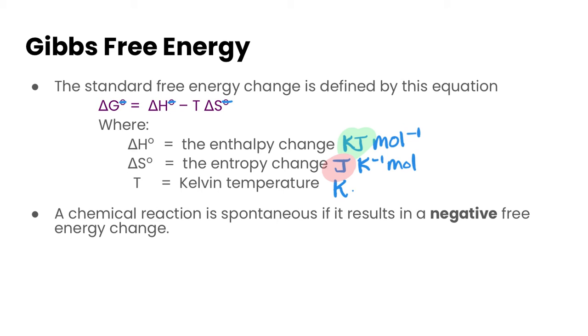Now when we do this calculation, a chemical reaction is spontaneous if it results in a negative delta G value. So if ΔG° is negative, it means that it is spontaneous. So that is the value that we are looking for here.